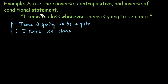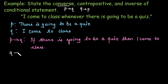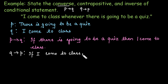The conditional statement is P implies Q: if there is going to be a quiz, then I come to the class. Now we need to write the converse. Converse means if P implies Q, its converse is Q implying P. So the converse is: if I come to class, then there will be a quiz.